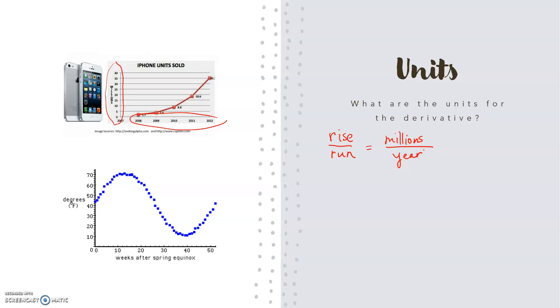If I look at the slope of that graph, it's going to tell me at any particular point how many millions of iPhones per year, how the rate of change of iPhones, the rate of iPhone sales in millions per year is. For example, if I'm looking at f prime at 2011, I would say the rate of iPhone sales in millions per year in 2011 is whatever I get when I do that, the rate of change.